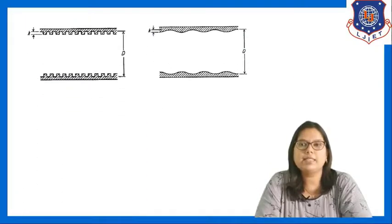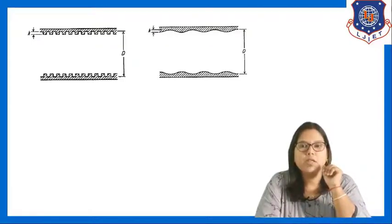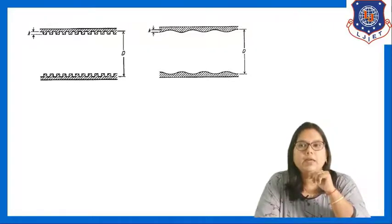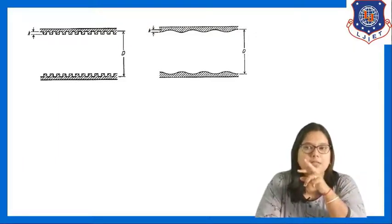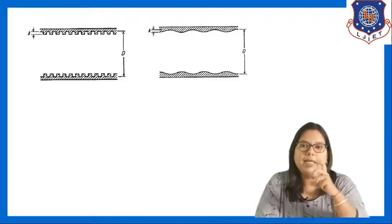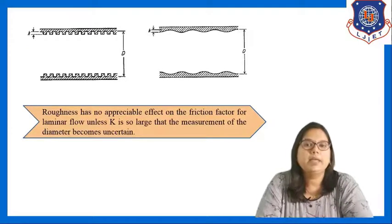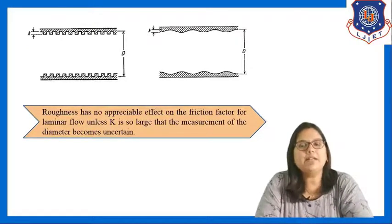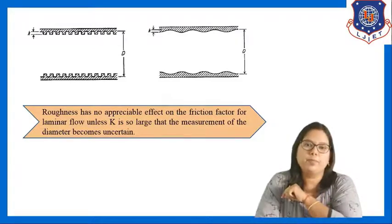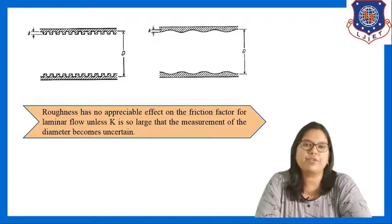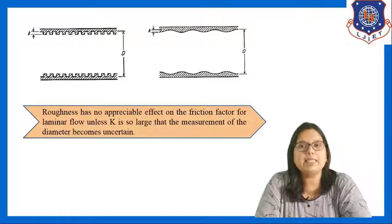In the figure, two examples of different roughness are shown. In the first figure, the roughness height is k and the diameter is d, so the ratio k/d is the relative roughness. Note that roughness has no appreciable effect on friction factor for laminar flow, unless k is so large that measurement of the diameter becomes uncertain.